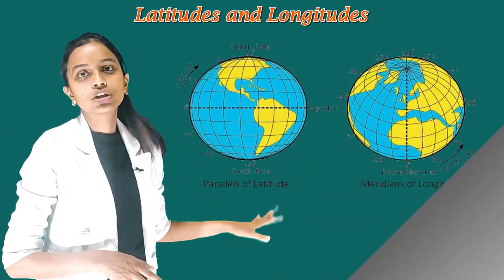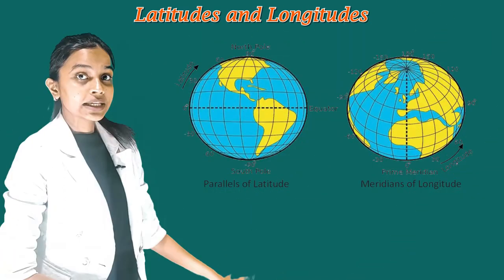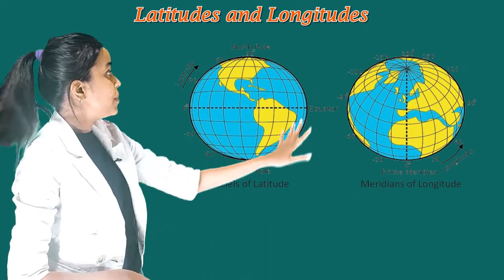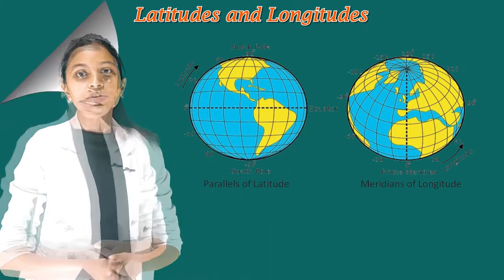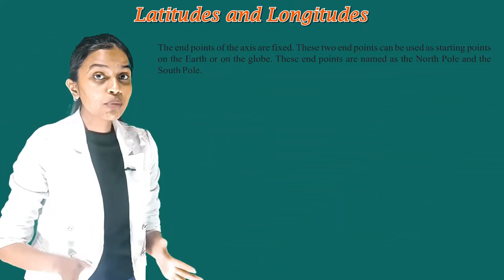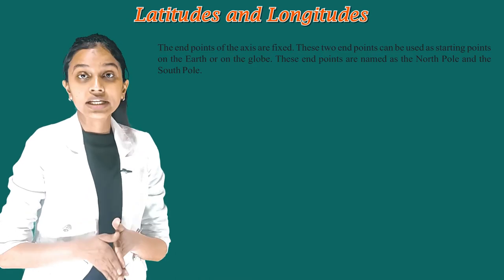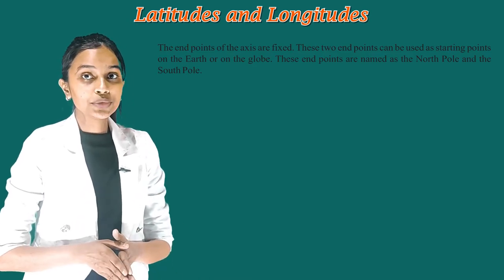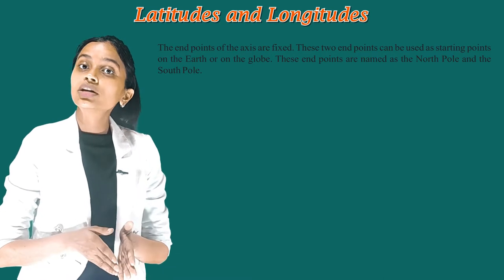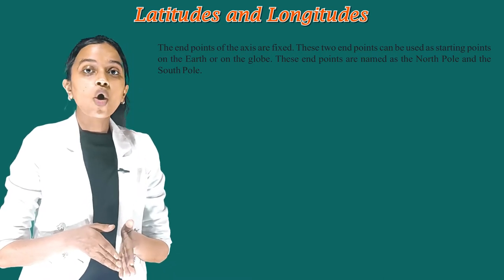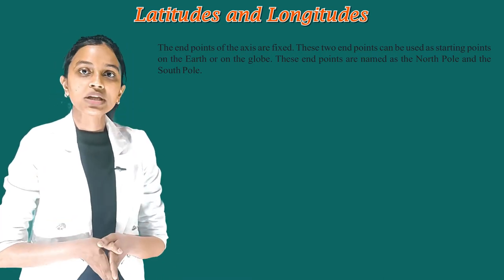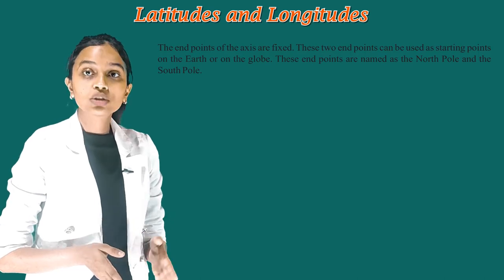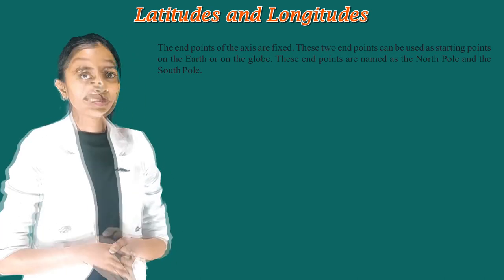As you see in the picture, the parallels of latitude and meridians of longitude. The endpoints of the axis are fixed. These two endpoints can be used as starting points on the earth or on the globe. These endpoints are named as the north pole and the south pole.